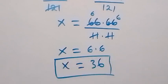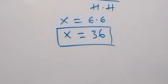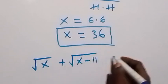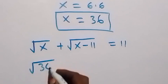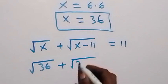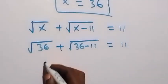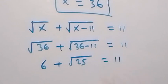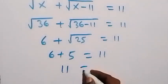We have the value of x equals 36. Now let's check: the original equation is root x plus root of x minus 11 equals 11. Substituting x equals 36, we get root 36 plus root of 36 minus 11, which is root 36 plus root 25. That gives us 6 plus 5, equals 11.